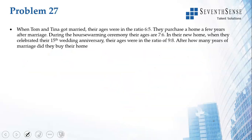Question: When Tom and Tina got married, their ages were in the ratio 6:5. They purchased a home a few years after marriage, and during the housewarming ceremony their ages were in the ratio 7:6. At their 15th wedding anniversary celebrated in their home, the ages were in the ratio 9:8. How many years after marriage did they buy their home?